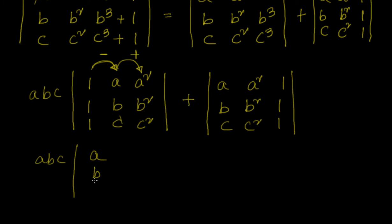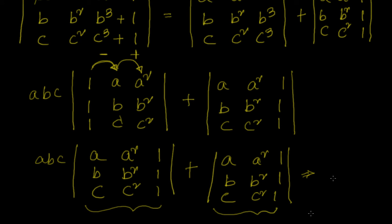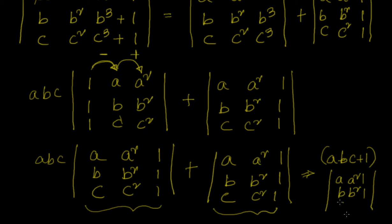So I can comfortably write the first determinant as the determinant of (A, A², 1), (B, B², 1), (C, C², 1) — matching the second matrix. That means the total is (ABC + 1) times the determinant of (A, A², 1), (B, B², 1), (C, C², 1).